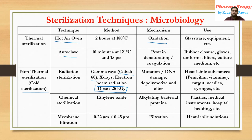The mechanism of action for radiation sterilization is DNA alteration — by depolymerizing the DNA and causing mutations in microorganisms, giving a sterilized product. It is used for heat-labile substances like penicillin or vitamins, as well as catgut, needles, and disposable syringes.